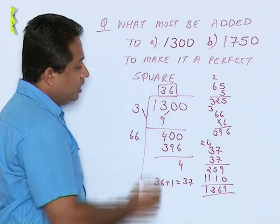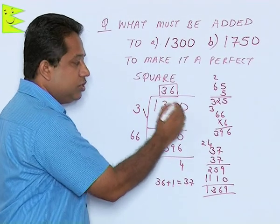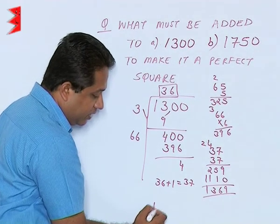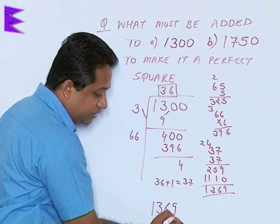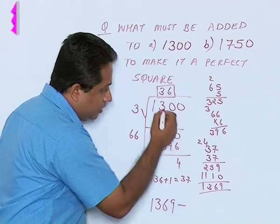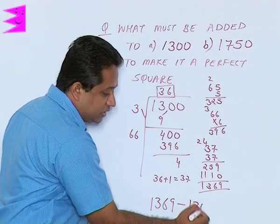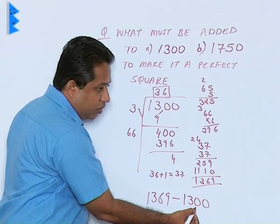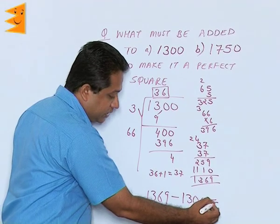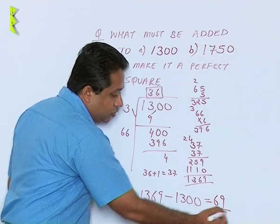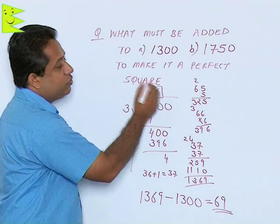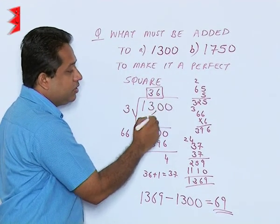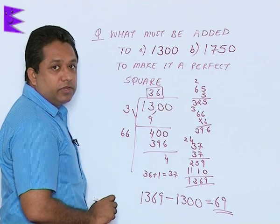And here the question was 1300. So what should be added to 1300 to make it this? To find that we can simply subtract 1369 from here. The question, we are going to copy it down here. And when we subtract this, we get 69. So the final answer to this question will be that 69 should be added to 1300 so that it becomes a perfect square.